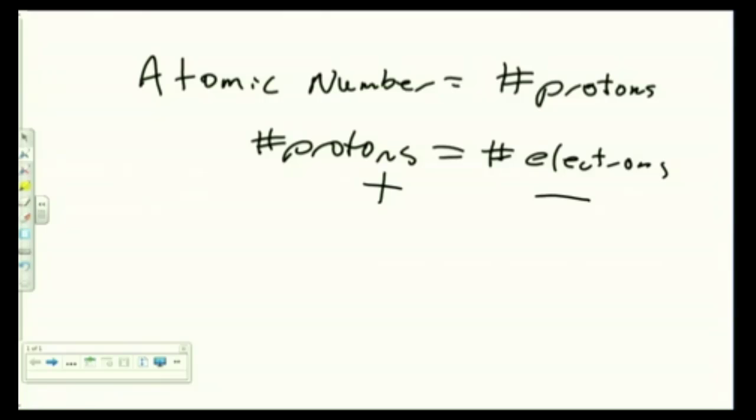Now one new term: the mass number. The mass number is protons plus neutrons. It is not found on the periodic table.